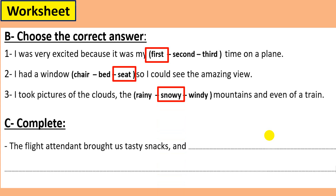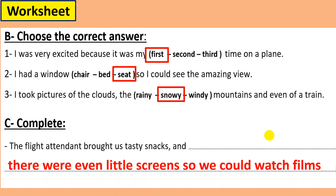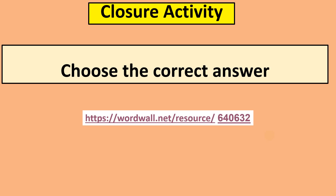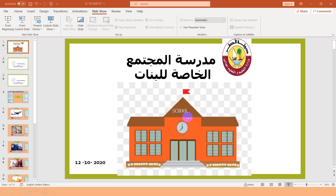Now let's have a look at the email again and try to complete these sentences. One: the flight attendant brought tasty snacks. Two: there were little screens so we could watch films. As a closure for this lesson, I want you to copy this link and practice using linking words — how can I form sentences or long sentences?